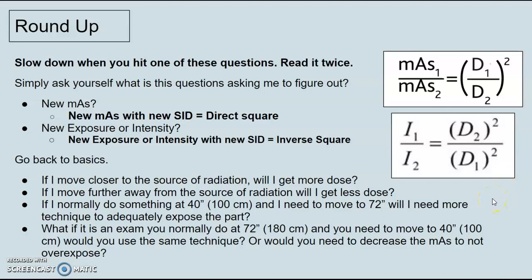Just a quick follow-up here. Slow down. Simply slow down when you hit one of these questions. Read it twice. Read it the first time, normal speed. Stop yourself. Read it again. Slower. Read every single word of the question. Simply ask yourself, what is this question asking me? Is it asking me for a new mAs? If there's a new mAs and a new SID, I know it's going to be direct. Is it a new exposure or new intensity? At a new SID, it's going to be inverse. So intensity and exposure will be inverse. When you go to plug in your formula, just remember, direct square with the mAs, the ones are directly across from each other and so are the twos. When you're doing intensity or exposure, the ones are diagonal from each other and the twos are diagonal. So it is inverse.